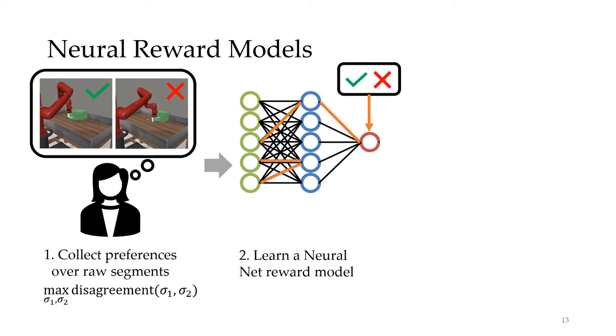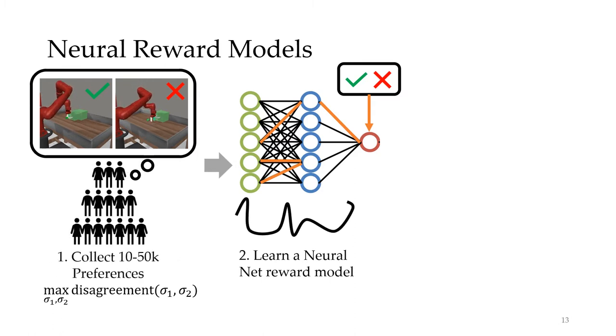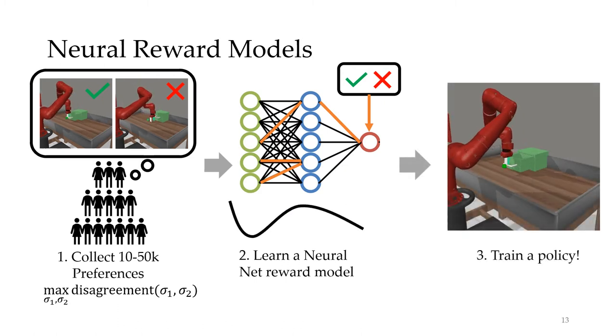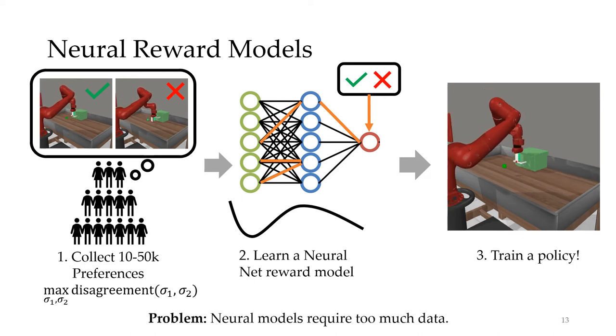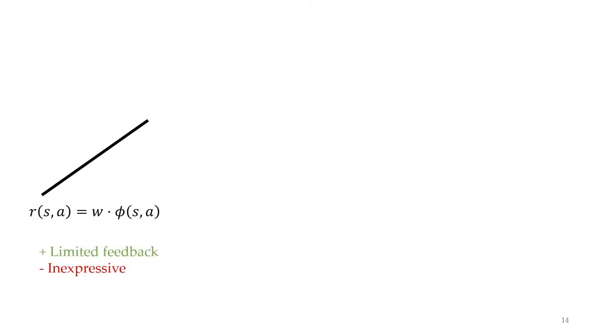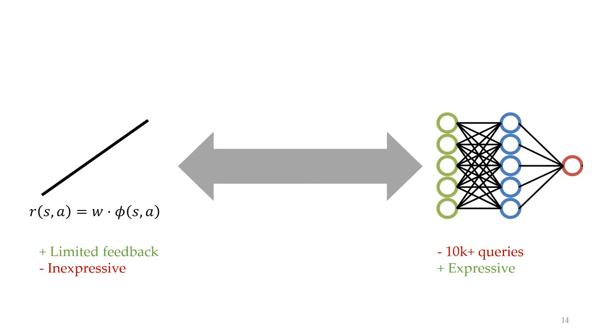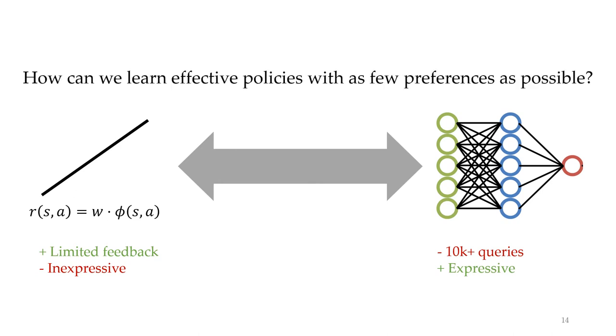However, deep networks have millions of parameters instead of the three used in our linear model. And so, in order to train a good reward model, we'll likely need many more queries. With tens of thousands of queries, we can learn a smooth reward model and ultimately train a successful policy. However, the problem with this approach is that it requires way too much data to be practical, especially when the data has to come from humans. On one end of the spectrum, we have simple models which are feedback efficient, but are too inexpressive for complex tasks. On the other side, we have deep models which are highly expressive, but take way too much data. This led us to think about how we could learn expressive reward functions using as few queries as possible.